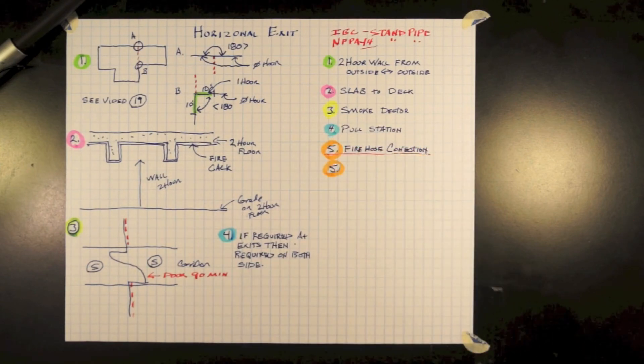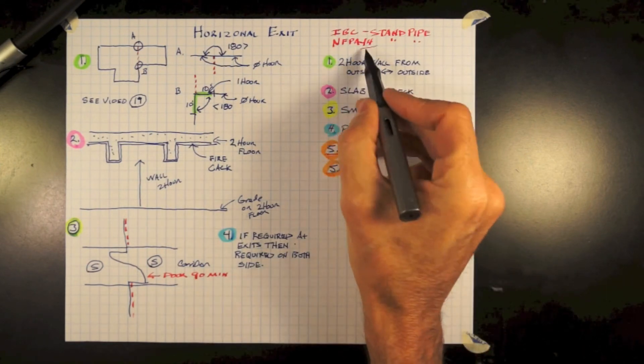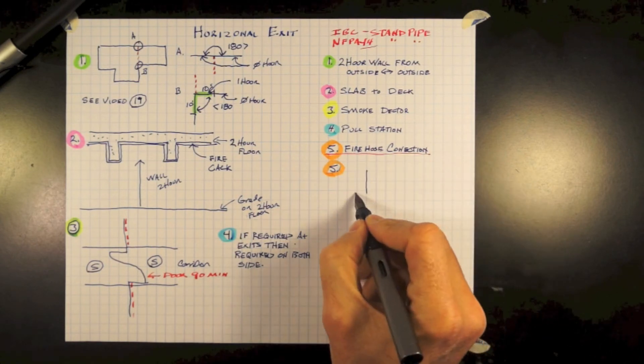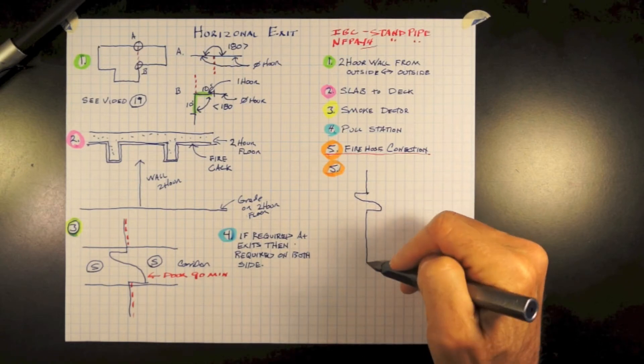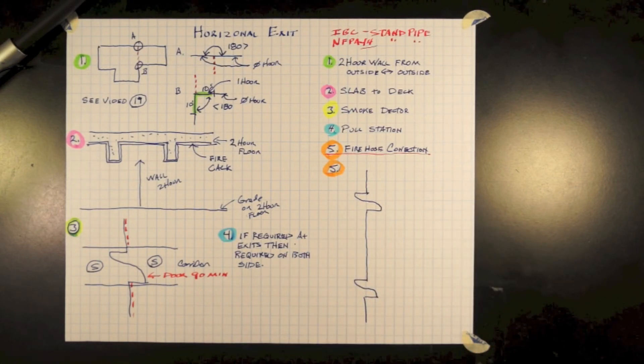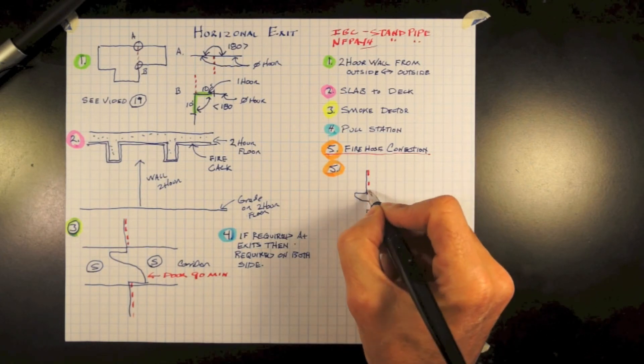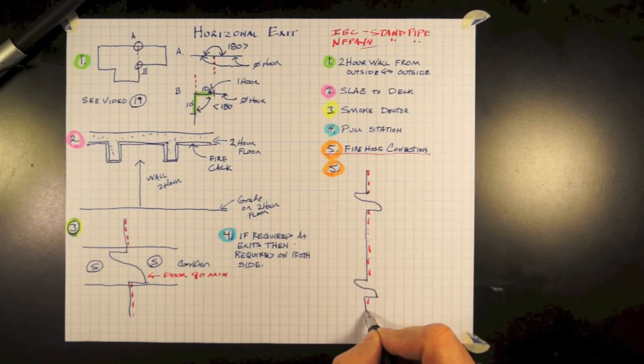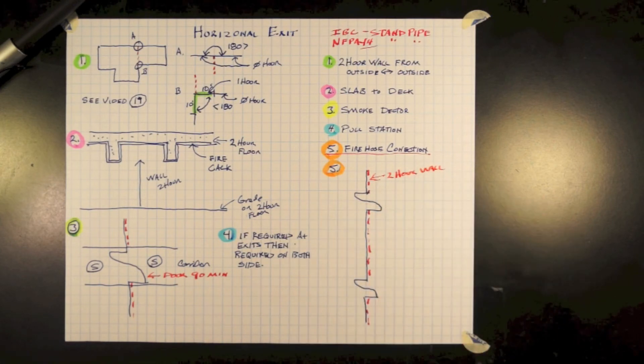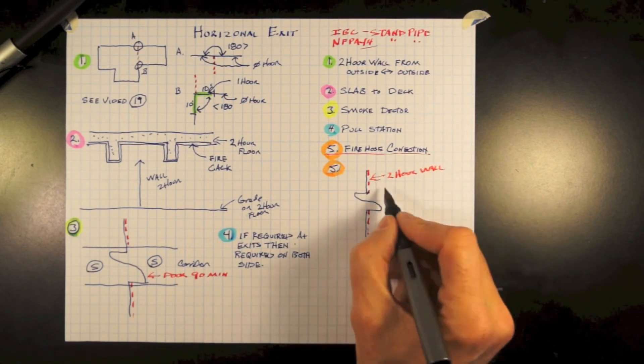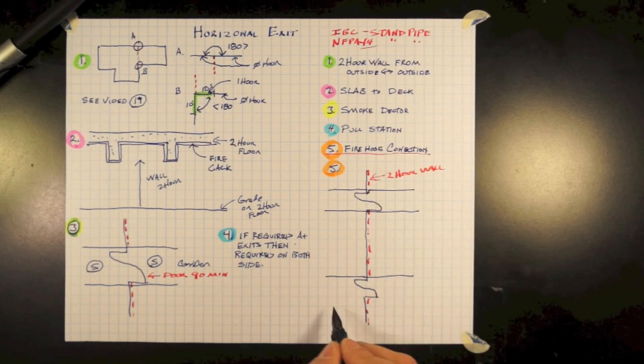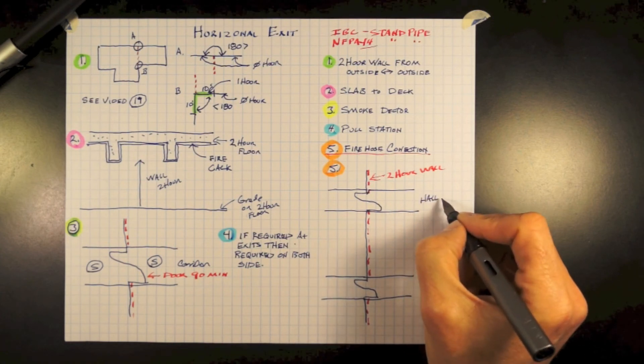And number five, what this video is really about: fire hose connections. They are required at every horizontal exit, and that is per NFPA 14 standpipe section and IBC in their standpipe chapter as well. So we have a wall bisecting our building.